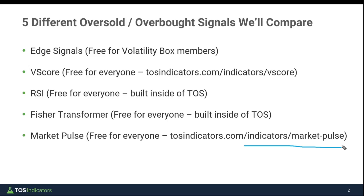Usually we use the Market Pulse to gauge direction. In today's video we're going to see if you can use the period in which direction changes as a means of confirming overbought/oversold zones — for example, when a bearish red line goes from red to gray to green as your signal that we're officially oversold and looking to start the next move up. That's the premise of today's video: five different signals, useful for both Volatility Box members and folks looking to profit from market volatility.